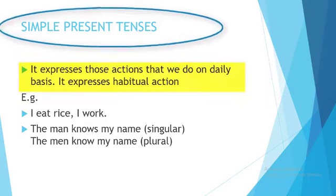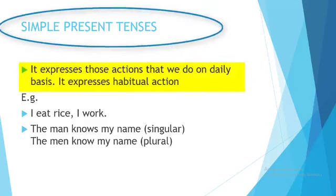Under the simple present tense, we have sentences expressing what you call habitual action — something you do on a daily basis. That's what we use the simple present tense for. For instance: 'The man knows my name.' 'He knows my name' — 'knows' is a simple present tense verb. 'I eat rice.' 'I work every day.' 'I run.'